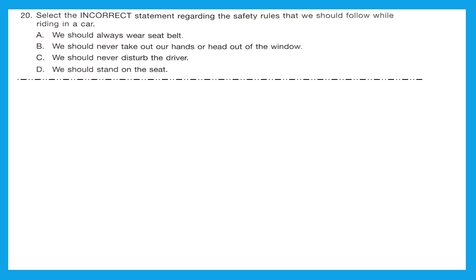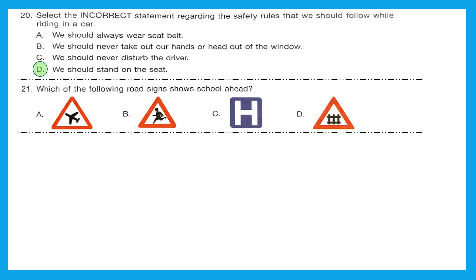Question 20: select the incorrect statement regarding safety rules while riding a car. Option A — always wear a seat belt — correct. B — never take out hands or head out of the window — correct. C — never disturb the driver — correct. Option D — we should stand on the seat — absolutely not, we may get hurt. So option D is incorrect and is our answer. Question 21: which road sign shows school ahead? Option A is airport ahead, B shows school ahead, C is hospital ahead, and D is guarded rail crossing. Our right answer is option B.